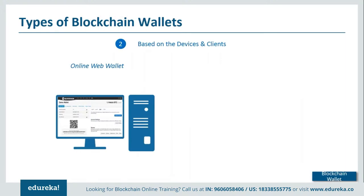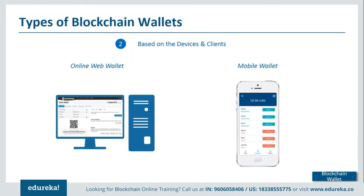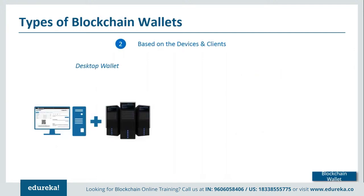Wallets can also be categorized by device type. Online web wallets store all your keys on a cloud-based server. Mobile wallets store private keys on your phone, sometimes linked to a web-based server. Desktop wallets act as cold wallets — all private key and transaction details are stored locally on the application, with only the final hash value propagated through the blockchain server, so they are not directly accessible to any third party.